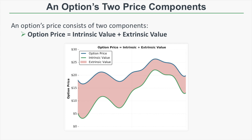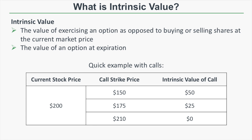So an option's two price components: if you look at an option's price, it may or may not have intrinsic value, but every option price will consist of intrinsic value plus extrinsic value. In this graph we're looking at the price of an option through time, showing the option's price, intrinsic value, and extrinsic value — and intrinsic value plus extrinsic value equals the total option price.